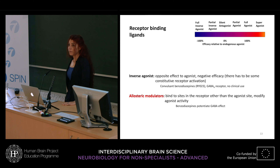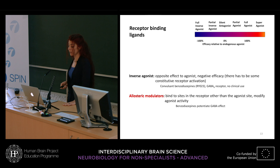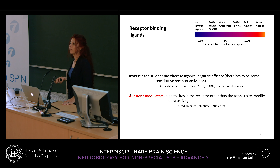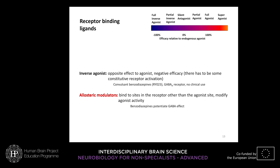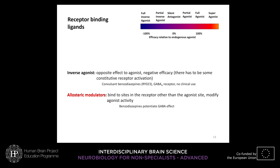There are two more kinds of ligands. Inverse agonists have the opposite effect to agonists — they produce negative efficacy and therefore require some constitutive activation of the receptor. This is the case of convulsant benzodiazepines that bind to GABA-A receptors but have no clinical use because they are convulsant. Allosteric modulators bind to sites in the receptor other than the agonist site and modify agonist activity — the classic example being benzodiazepines.